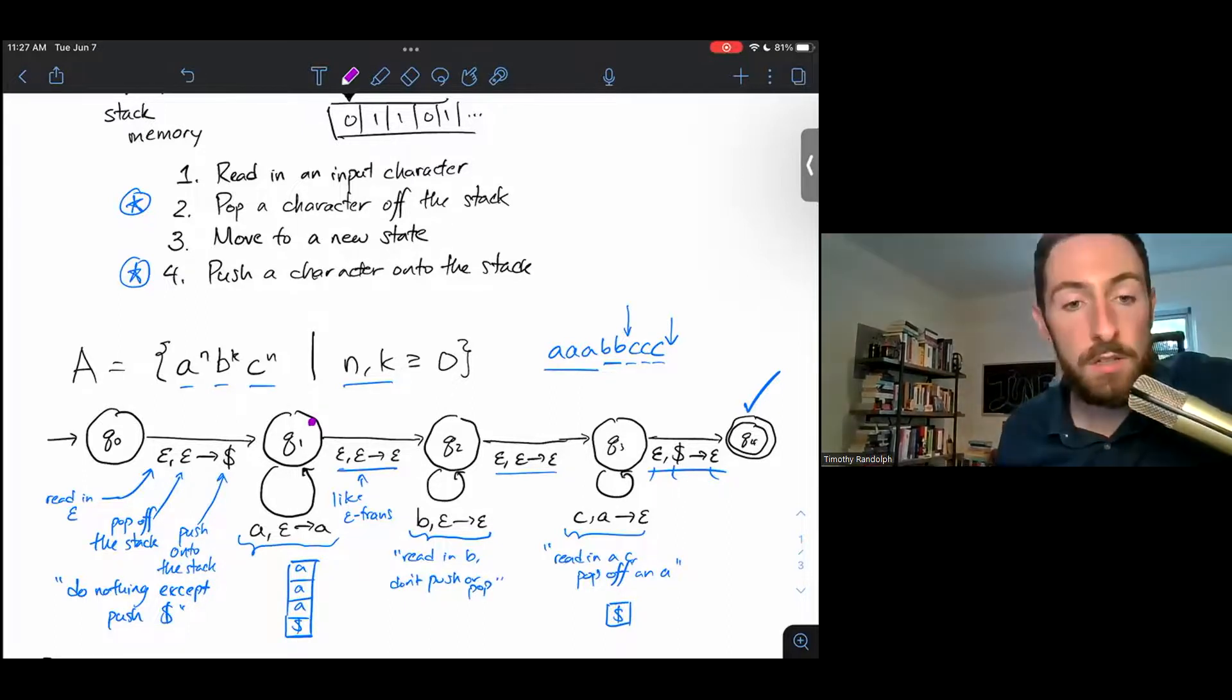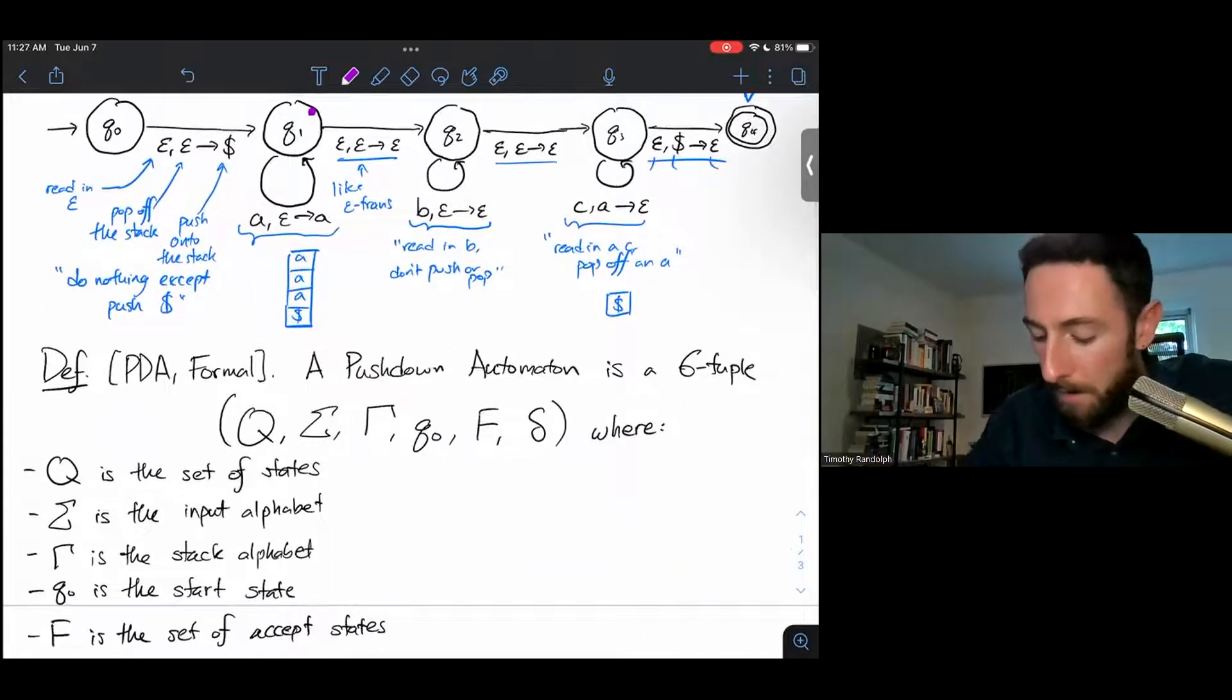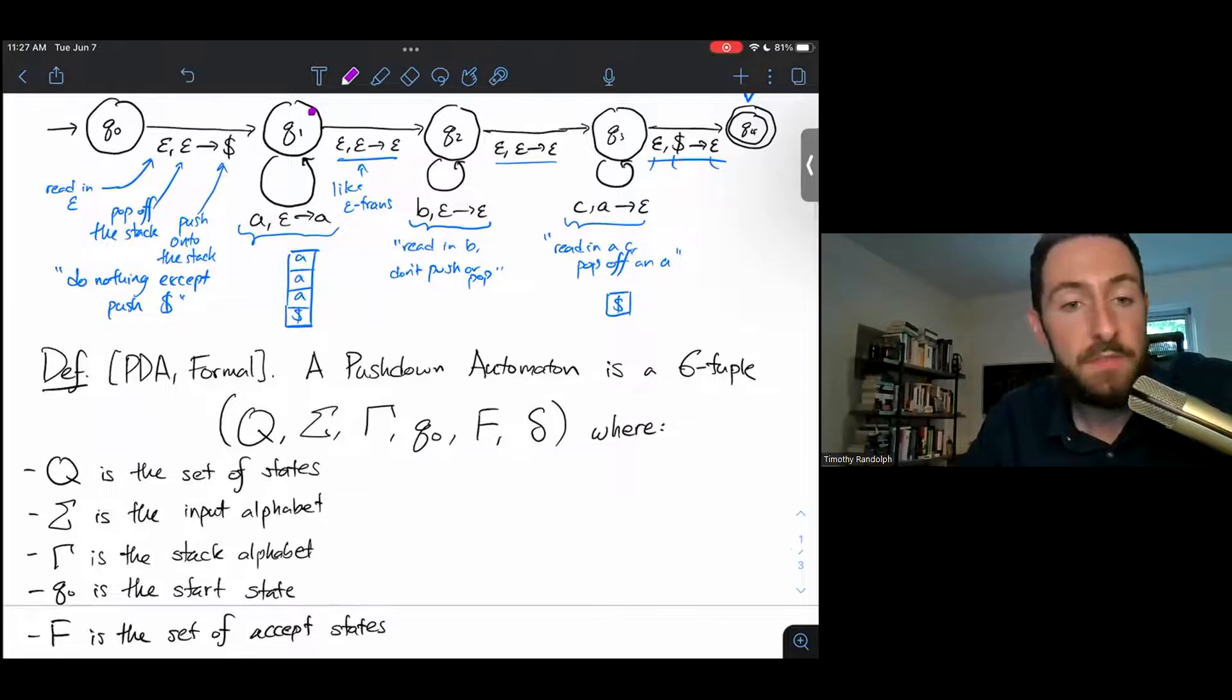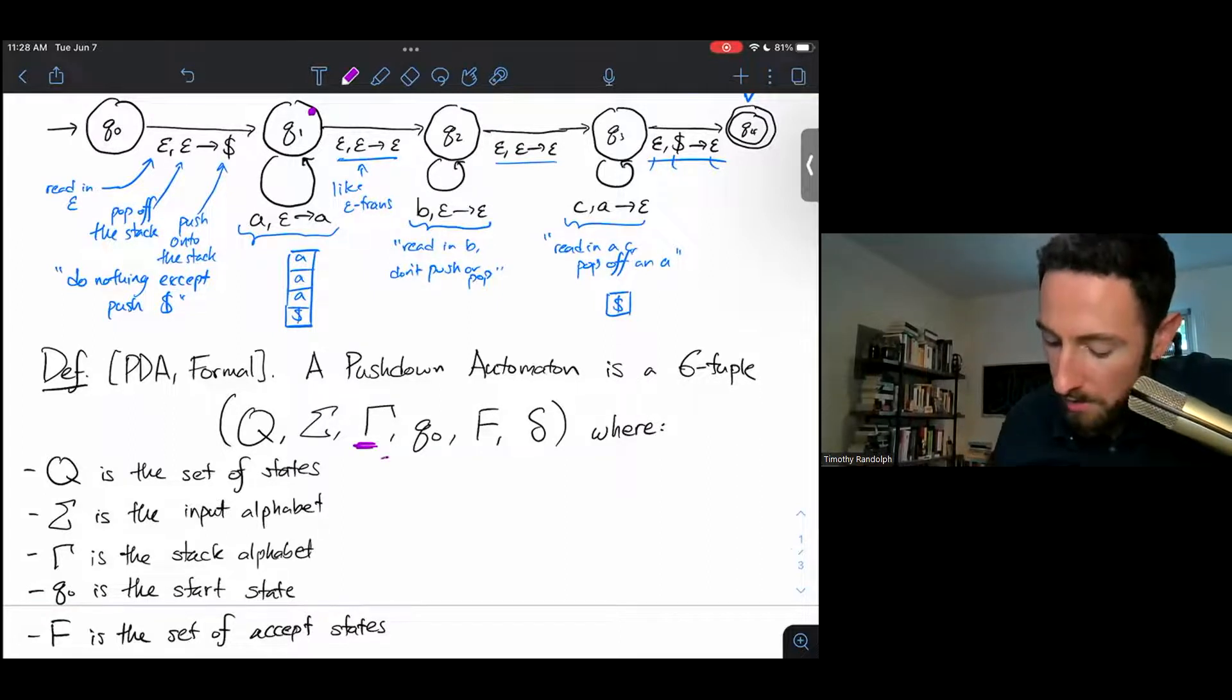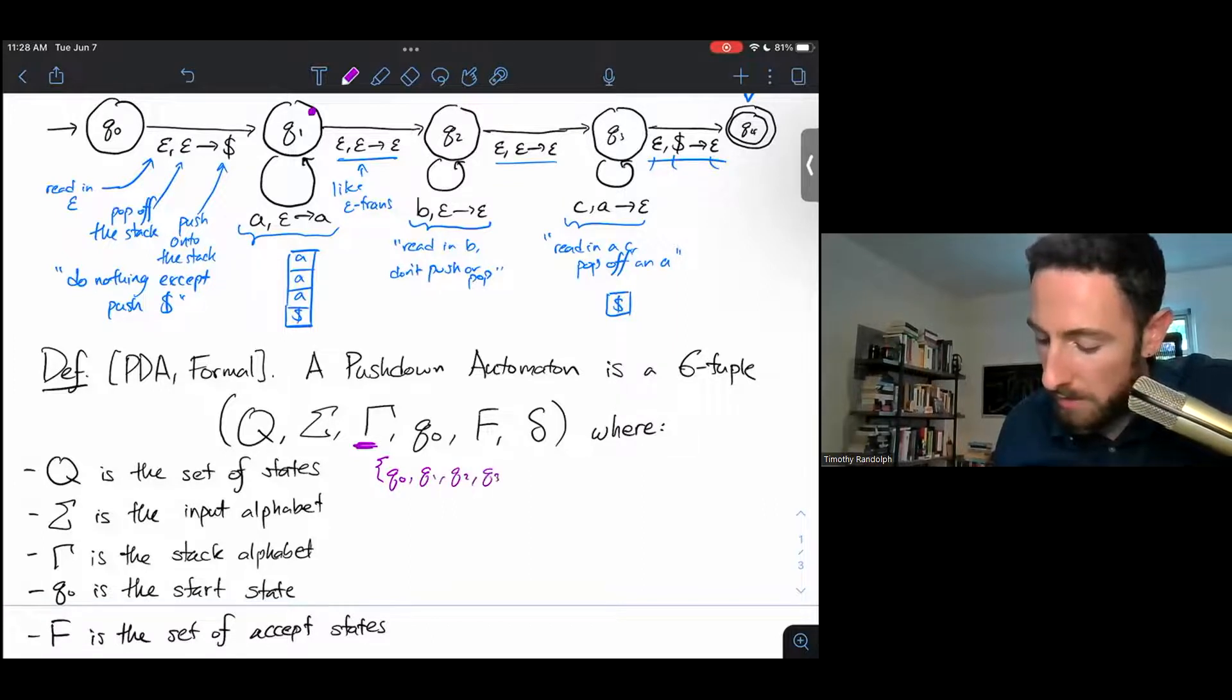So we'll conclude with the formal definition of a pushdown automaton, which looks a lot like the formal definition of an NFA. It's got one extra character, this hangman looking thing that is a capital gamma. So a pushdown automaton is a six tuple Q, sigma, gamma, Q0, F and delta, where most of these letters have familiar roles. So Q will tell us our state set. In the example above, that's just Q0, Q1, Q2, Q3, and Q4.